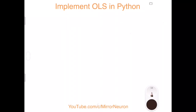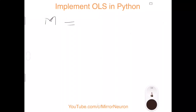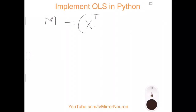The OLS solution is given by X-transpose — where X is the data matrix containing all the features — dot product with itself, taking the inverse of this expression, then dot product with the transpose of the data matrix.